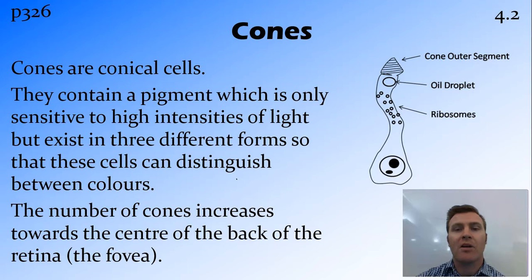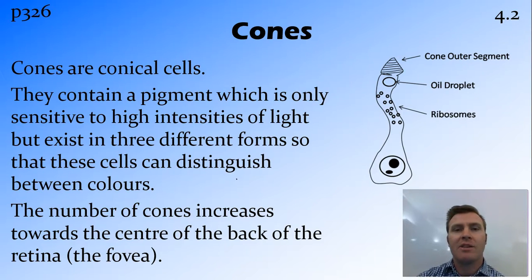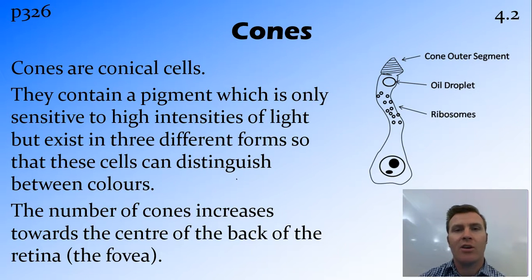The first one we'll talk about is the cones. Rods and cones are defined by their shape, so the outer segment of the cones has this conical shape. This is a stack of membranes that have the photopigments in it. These pigments are sensitive to high intensities of light, and there are different types of cones with different pigments that allow you to distinguish between different colours. Most cones are found in the centre of the retina at the fovea, and they decrease towards the outskirts.